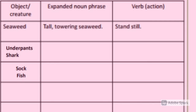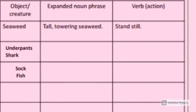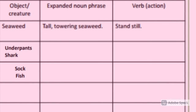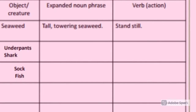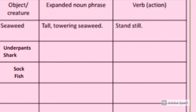Use this table to help you create your sentences. You'll see there's an object and creature column that you can create your own. There's a section for you to write your adjectives to make expanded noun phrases, and a section for you to write your verbs. You could also add your own section for adverbs.